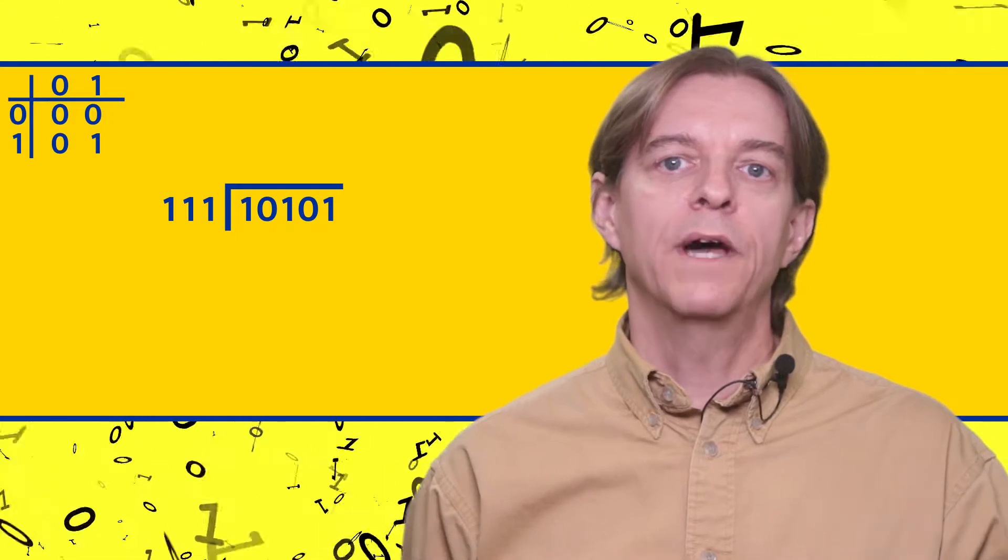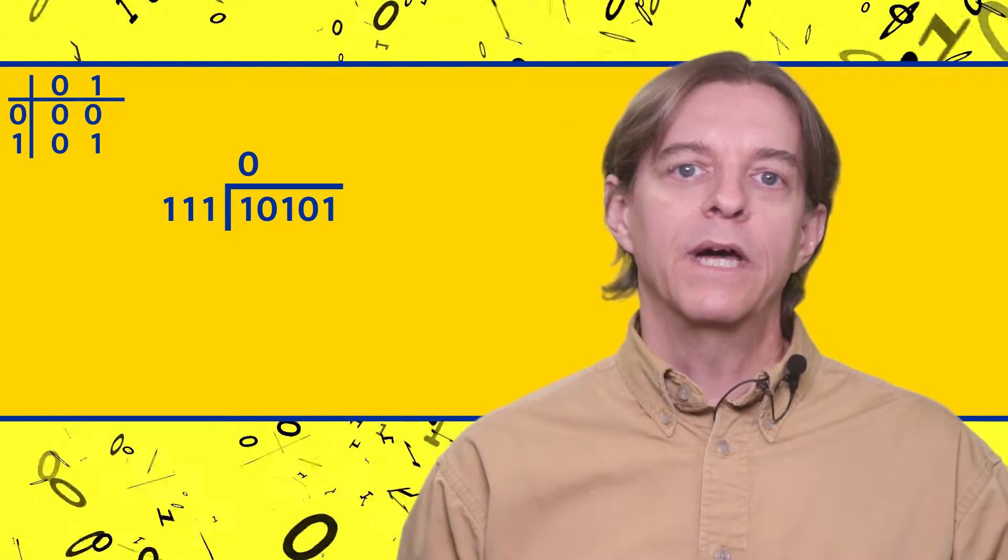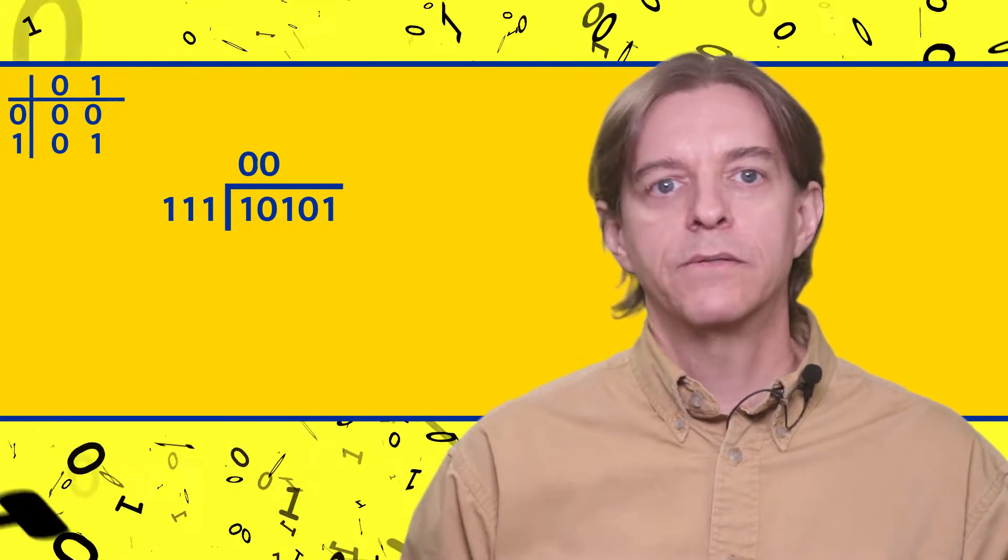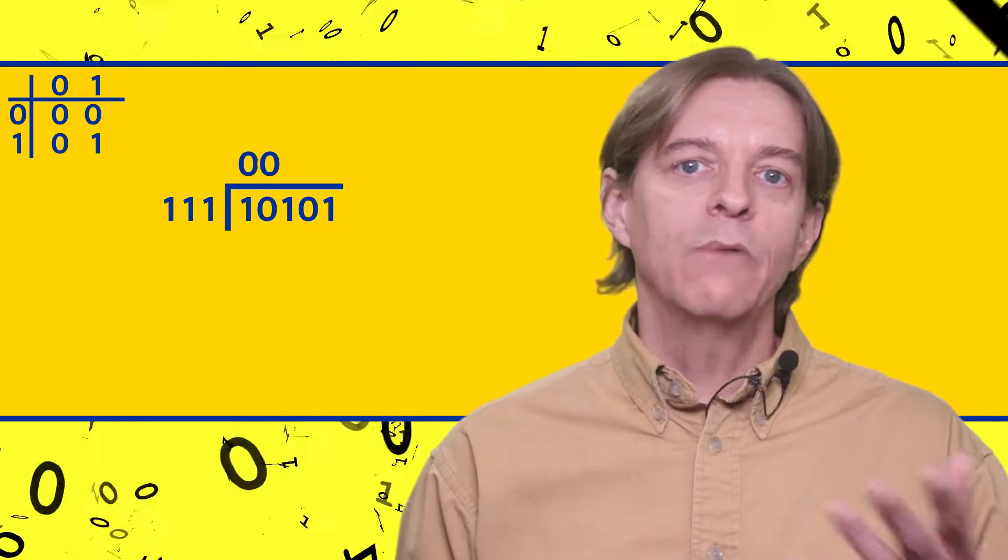Working through this example, 111 is obviously larger than 1, so we start with zero. 111 is larger than 10, so we write down another zero. 111 is larger than 101, and again we write down a zero.